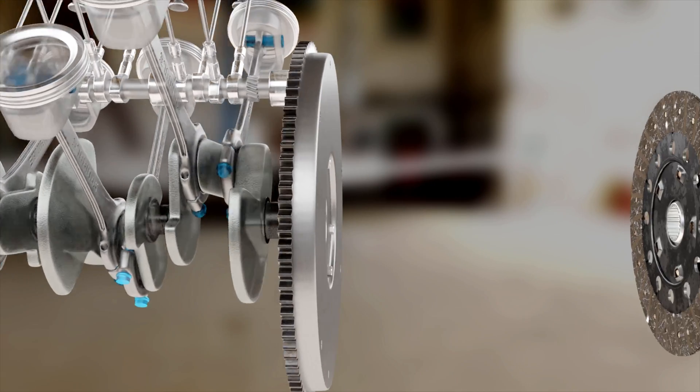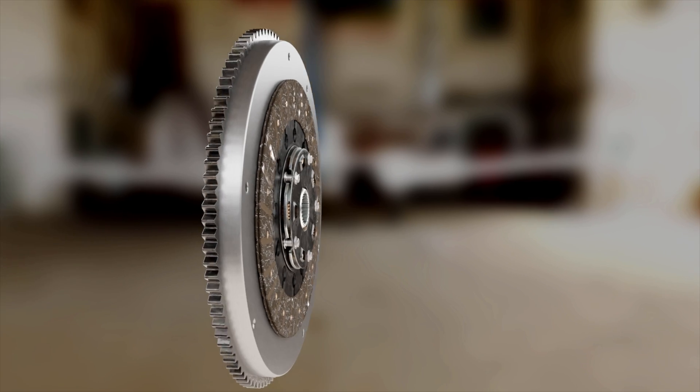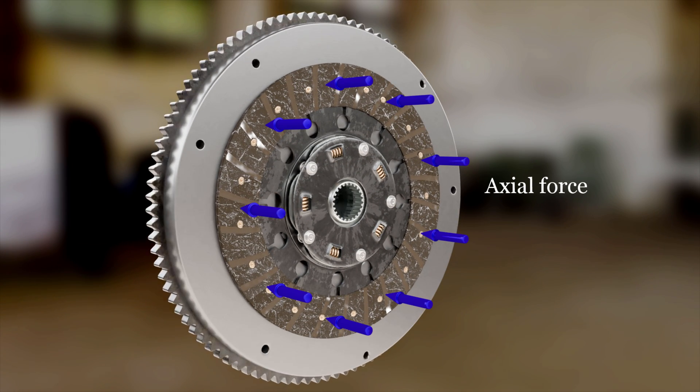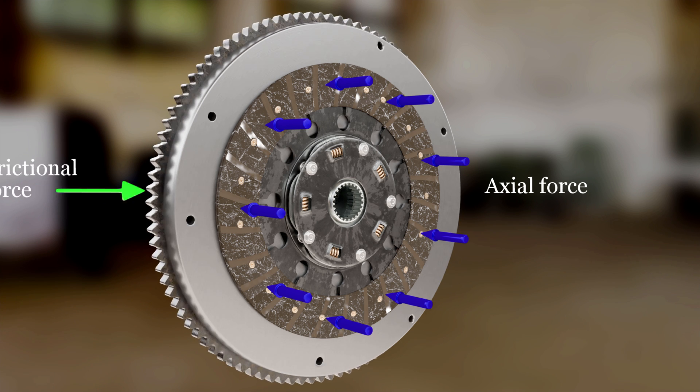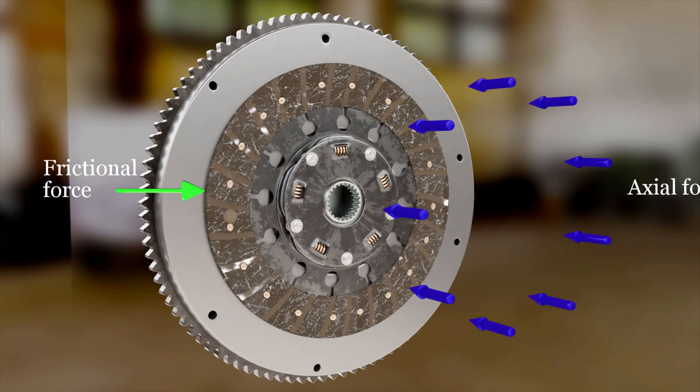Suppose the engine is running and therefore the flywheel is rotating. Now, if the clutch plate is brought in contact with the flywheel surface by applying some axial force, a frictional force starts acting between them and the clutch plate starts to rotate.